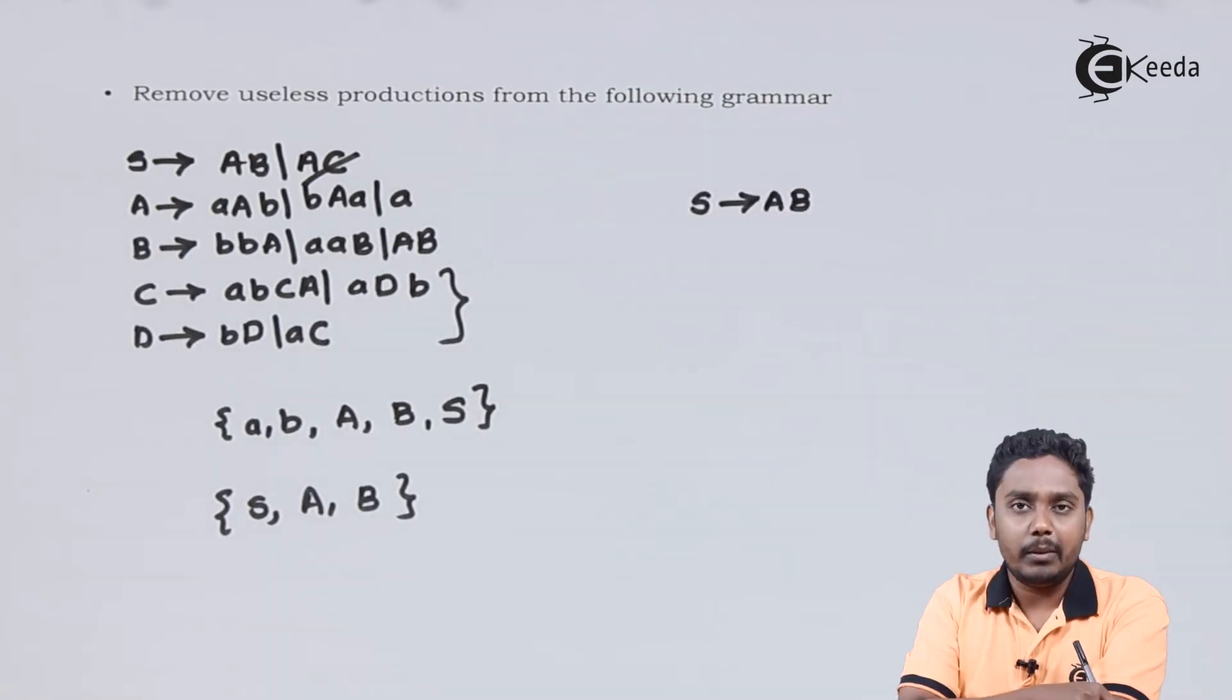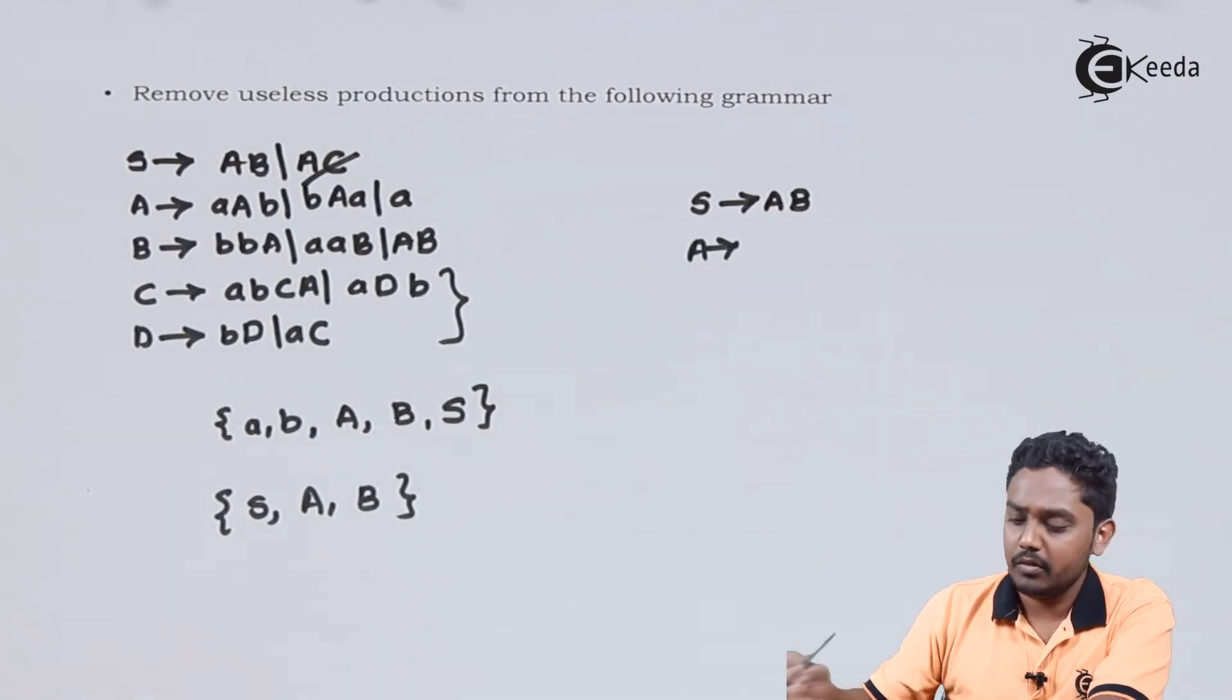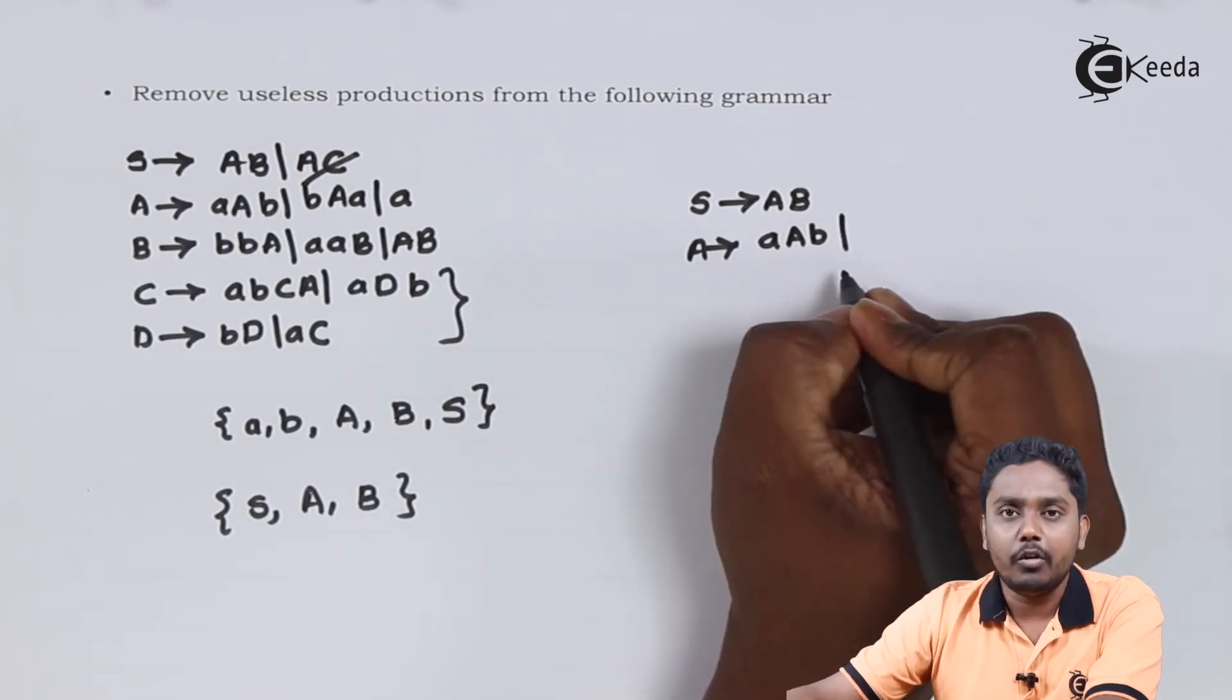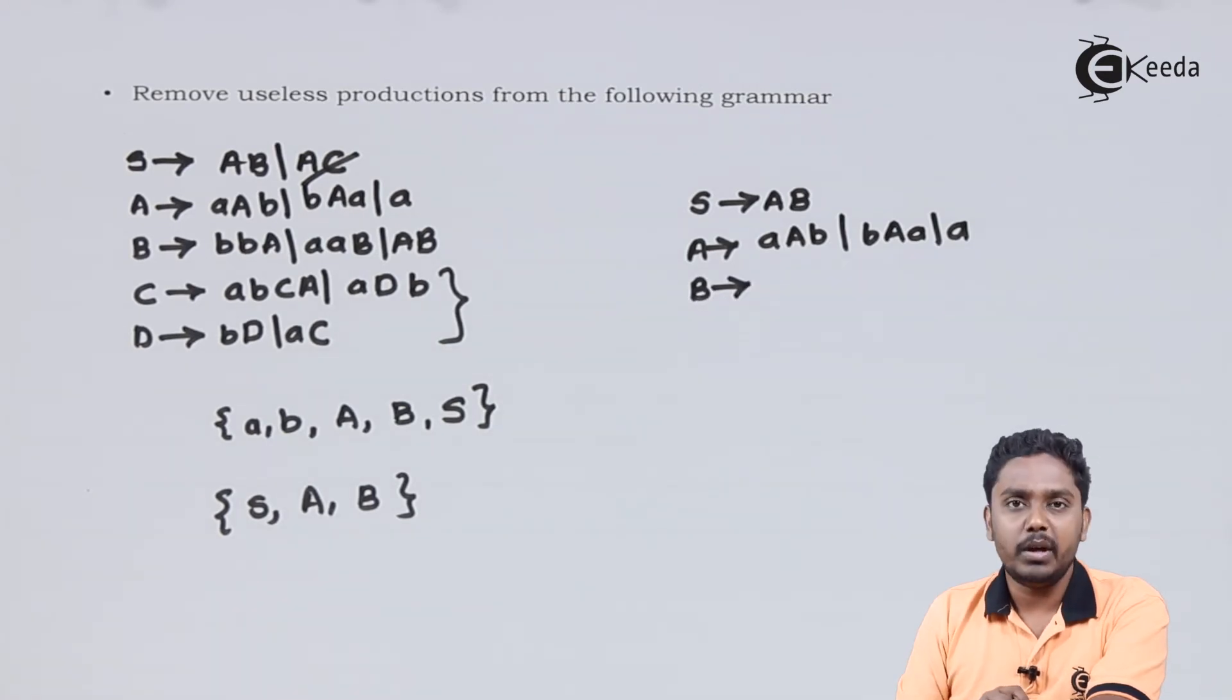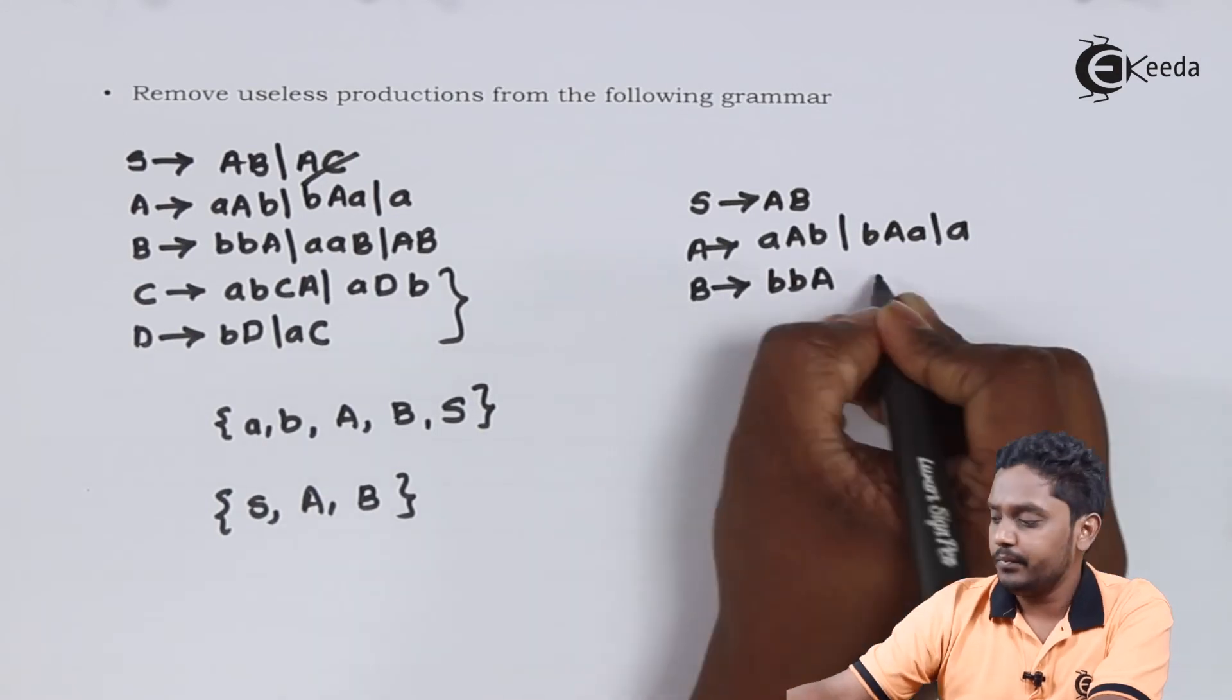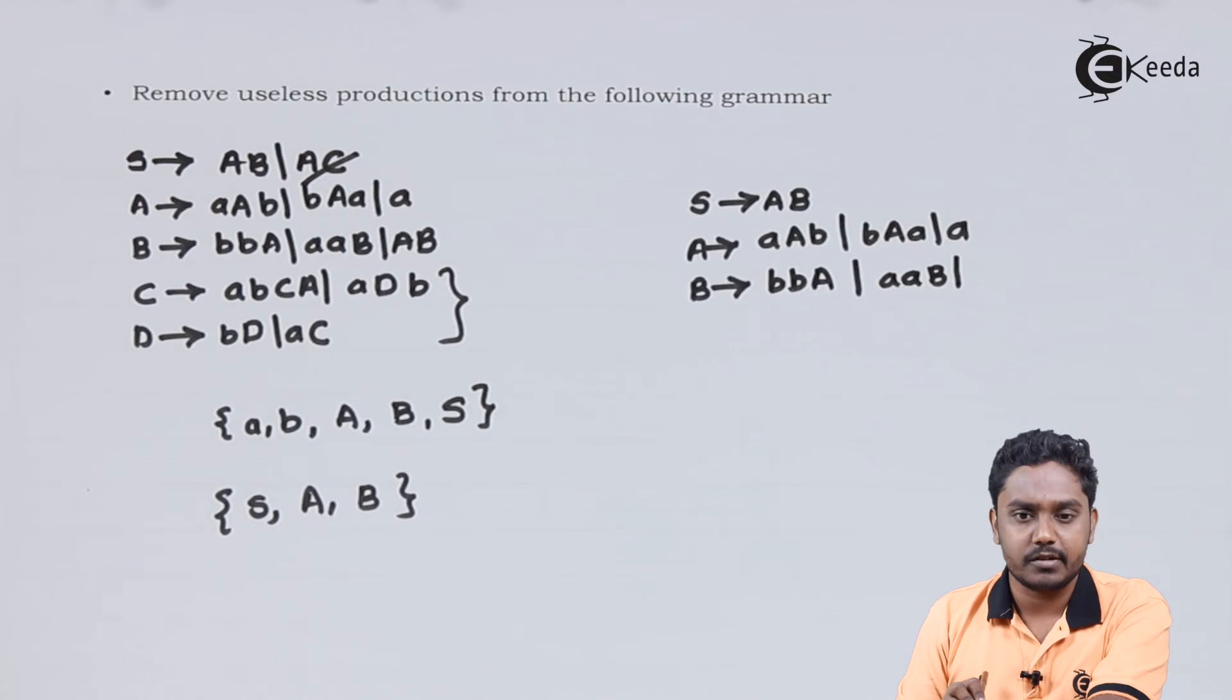S produces AB would be preserved. A produces AAV or VAA or A must be preserved. B produces VVA or AAV or AB must be preserved.